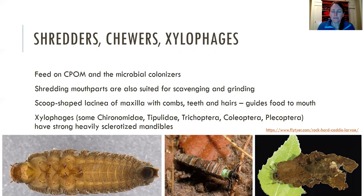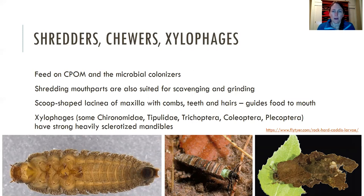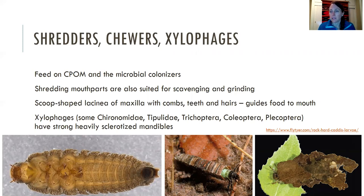The xylophages — which are some types of chironomids, tipulidae, trichopterans, coleopterans, and plecopterans — have really strong, very heavily sclerotized mandibles that allow them to chew through wood. Some of the organisms shown include Lara avara, a caddisfly, and two caddisflies: one making its case out of little bits of grass cut lengthwise like a log cabin, and another making a case out of leaf materials patched together like a quilt. These are all organisms that are shredding up organic material and sometimes using it to build their own cases.